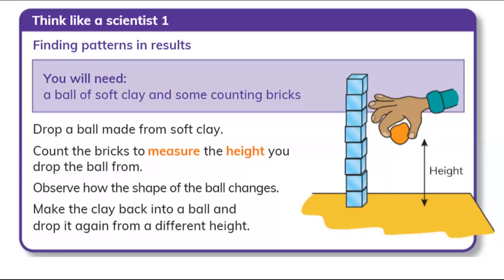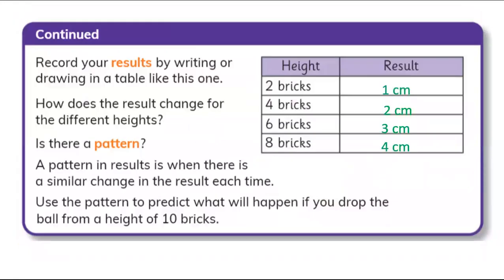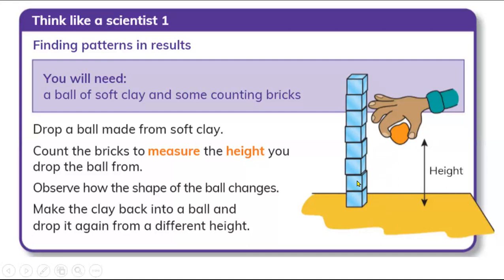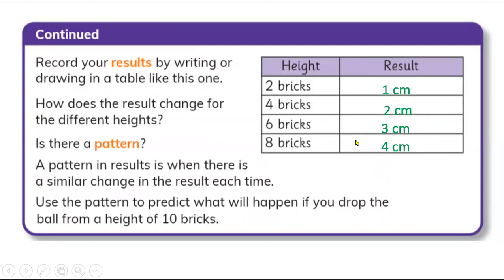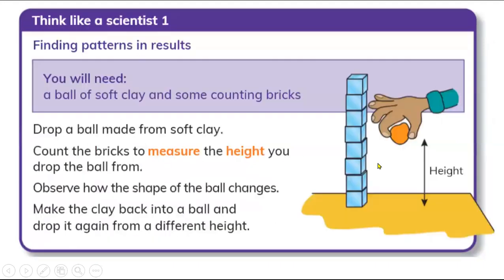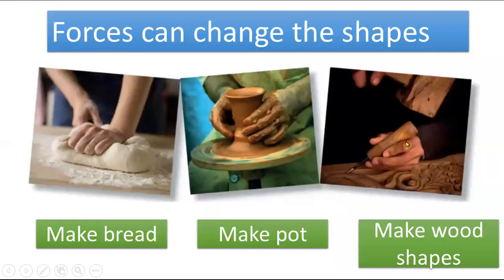If you throw the clay ball from two cubes high, the shape will change but only very slightly — very small changes. Try it at home and record your results. For example, if you throw from two bricks the change is about one centimeter; from four bricks, two centimeters; from six bricks, three centimeters; from eight bricks, four centimeters. Count how much smaller your ball gets each time.